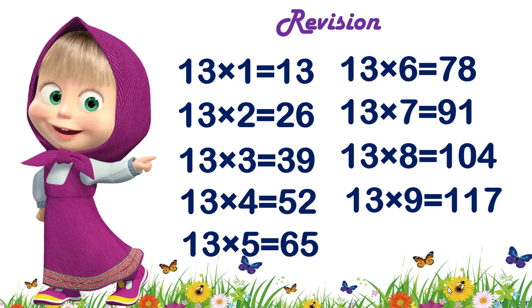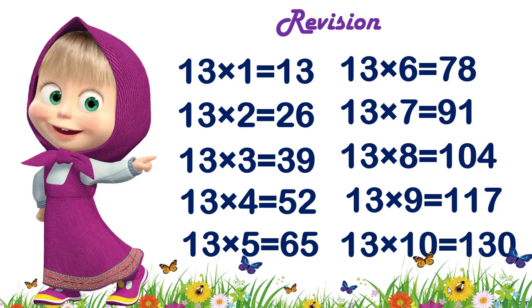Thirteen nines are one hundred and seventeen. Thirteen tens are one hundred and thirty.